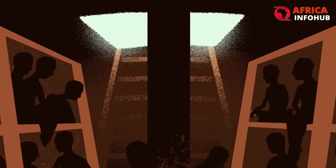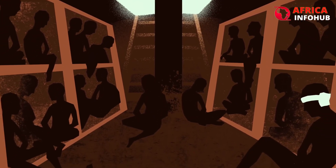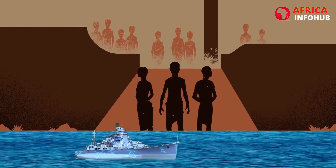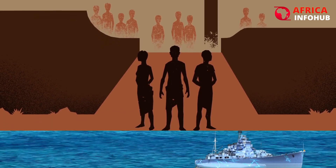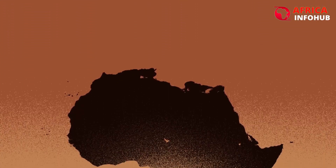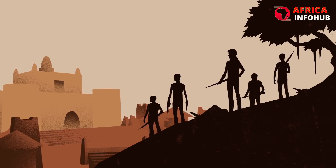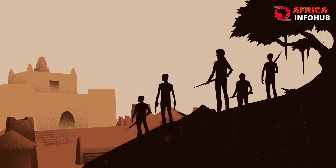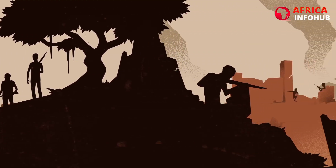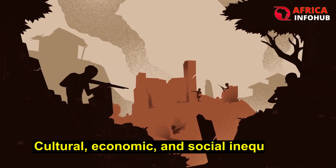The slave trade also played a significant role in the formation of the Gambia. For centuries, the Gambia River was a major thoroughfare for the transport of slaves from the interior of West Africa to the coast, where they were sold to European slave traders. This brutal trade had a profound impact on the region and its people, and it has left a lasting legacy in the form of cultural, economic, and social inequalities.